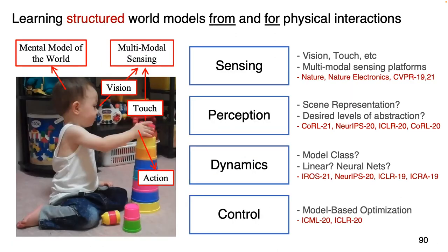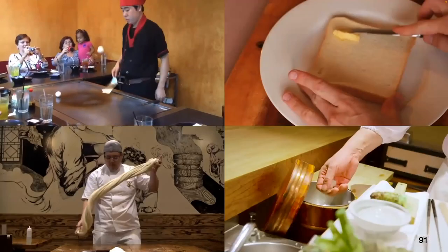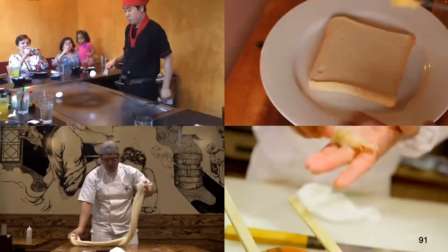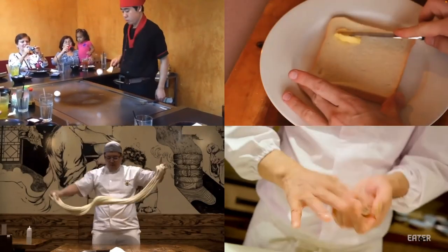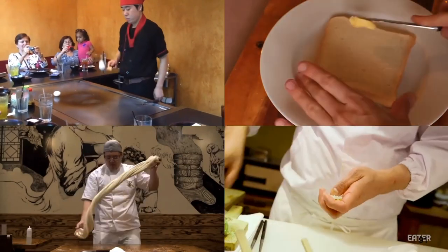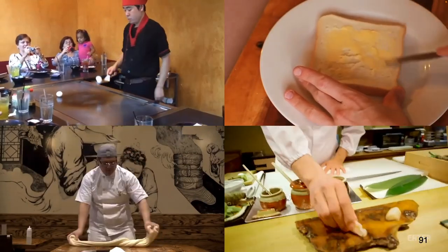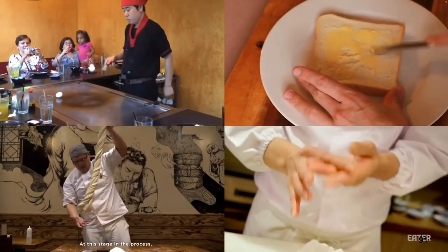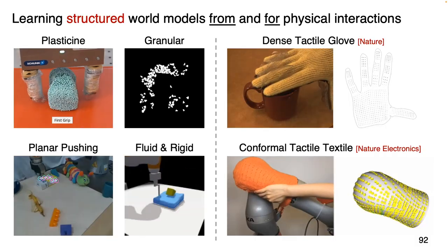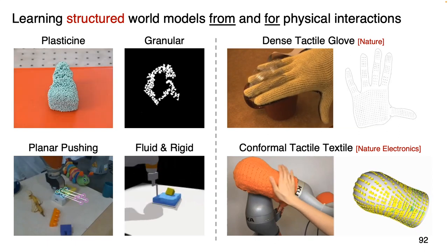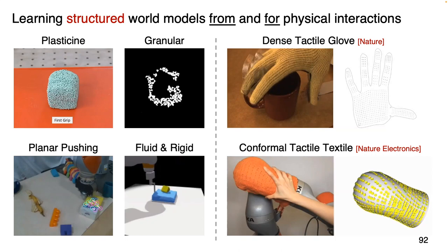I hope I have given you a holistic picture of how my research has contributed to robots' capability of making better physical interactions with the environment — all the way from sensing, perception, dynamics, and control. I have also discussed in depth how structure in the system can deliver better sample efficiency and generalization capability. I will continue the momentum of my research trying to close the gap between human and robot capabilities. With innovations and the right structures all the way from sensing, perception, dynamics, and control, I will take the robot's capability to another level. Thank you, and I'm happy to take any questions.